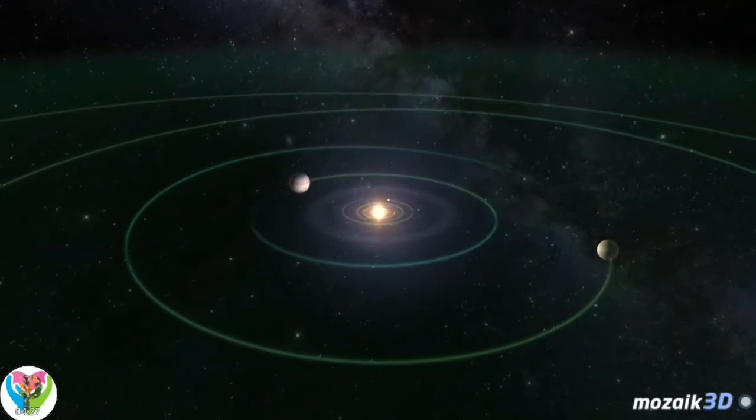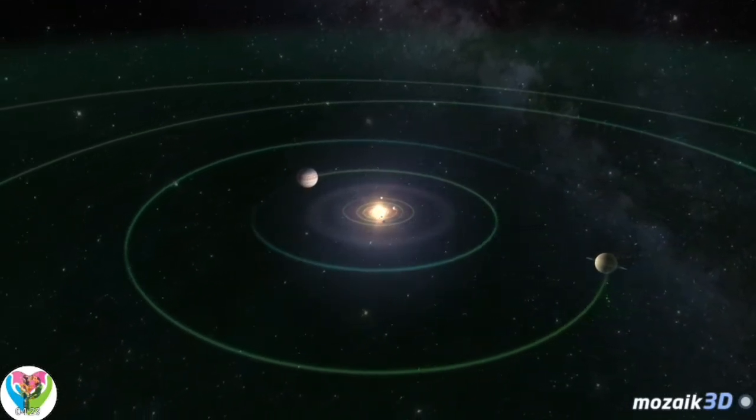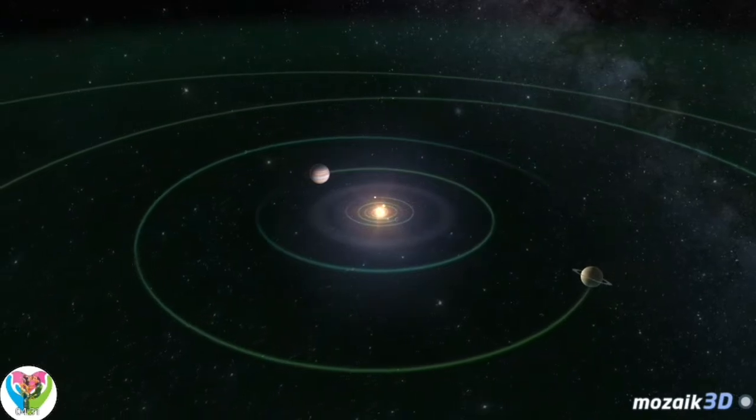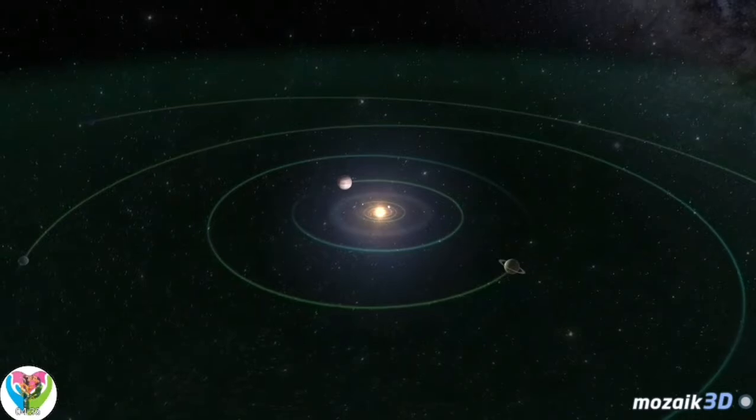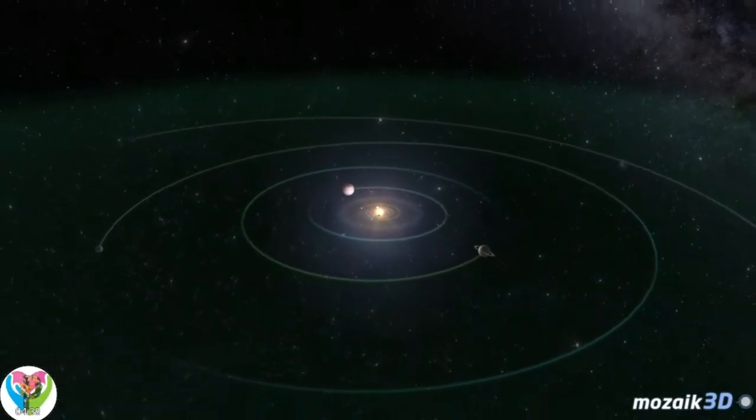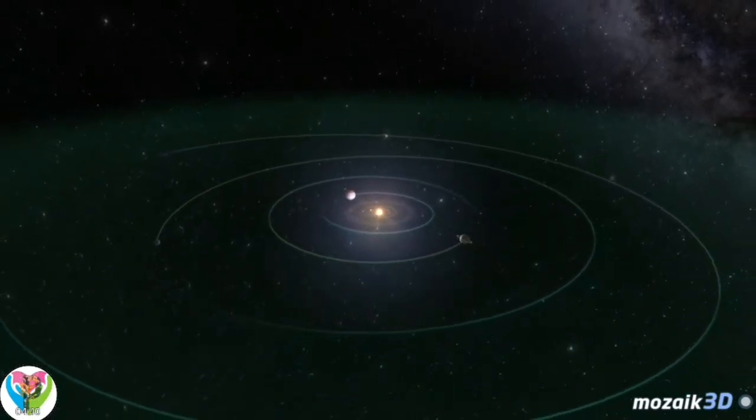Since 1995, numerous exoplanets have been discovered around hundreds of stars. In many of these systems, giant planets orbit the stars. Therefore, we can safely assume they are not similar to our solar system.